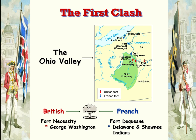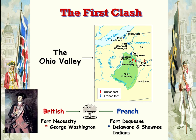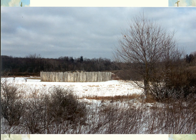Fort Duquesne on the map is modern day Pittsburgh. The Native Americans are helping the French — remember, the French and Indians got along really well because the French treated them better than other European groups. The Delaware and Shawnee Indians are the ones we see helping the French in this particular war. Here's young George Washington, and here's Fort Necessity — you can see it's not a very ample fort. It was built out of necessity for protection, so the name fits it well.